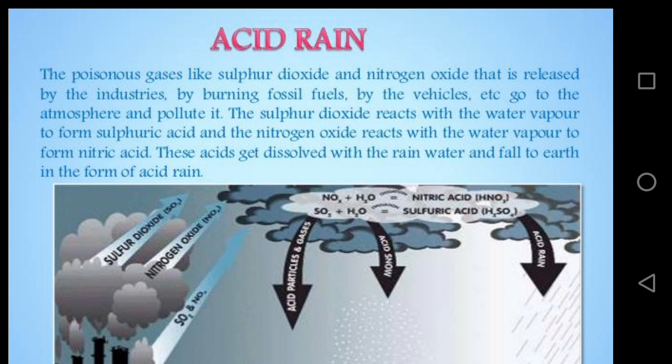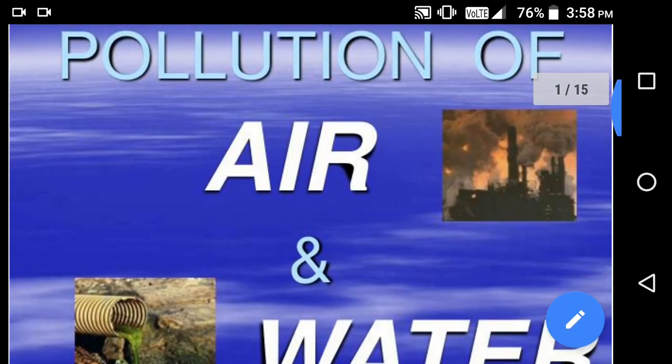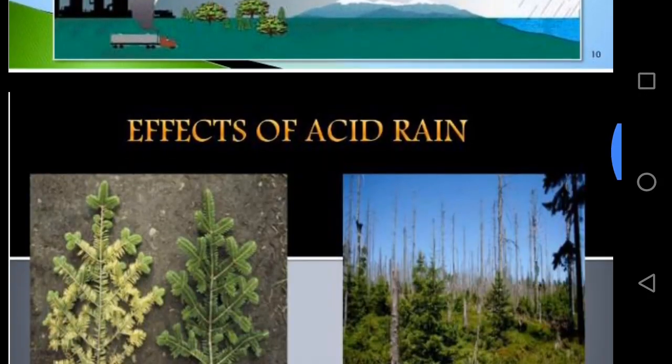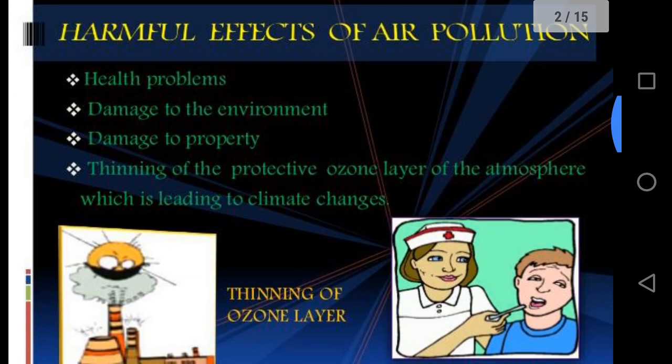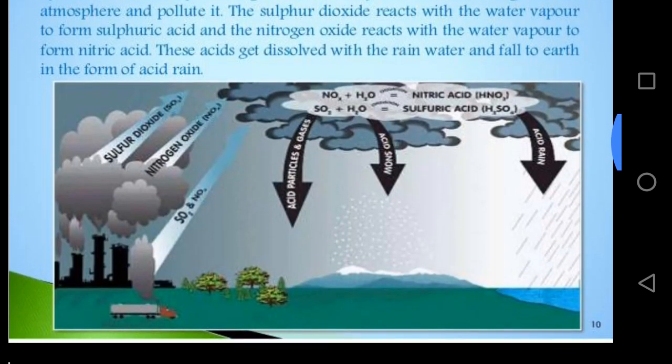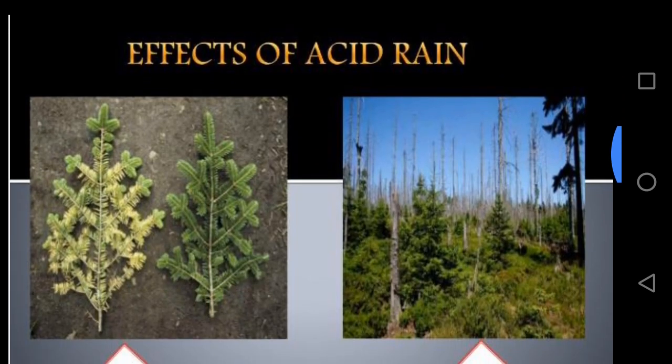Acid rain has a harmful effect on our environment. It affects both living organisms as well as non-living things. It hurts plants, damaging their leaves and roots. It also hurts aquatic life. Acid deposition leaches nutrients from the soil, degrading soil quality.